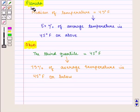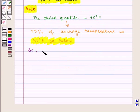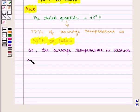It means from the sample of Florida we see on half of the days the average temperature is 45 degree Fahrenheit or more. And from Ohio sample we conclude that on most of the days the average temperature is 45 degree Fahrenheit or below. So we can conclude that the average temperature in Florida is greater than average temperature in Ohio.